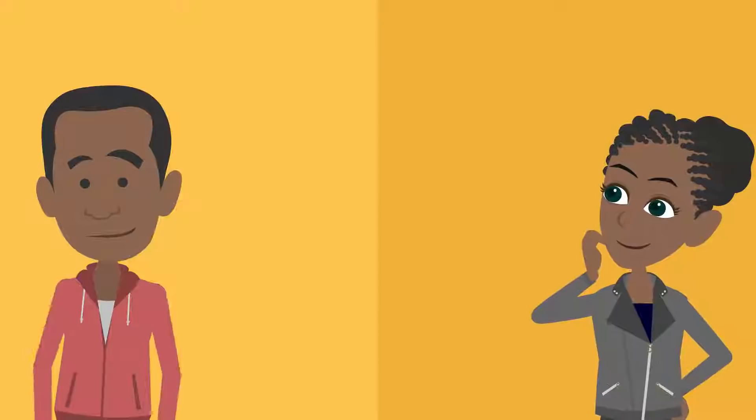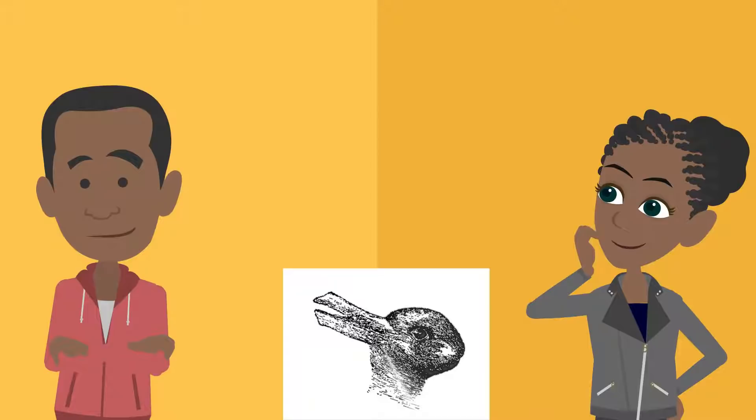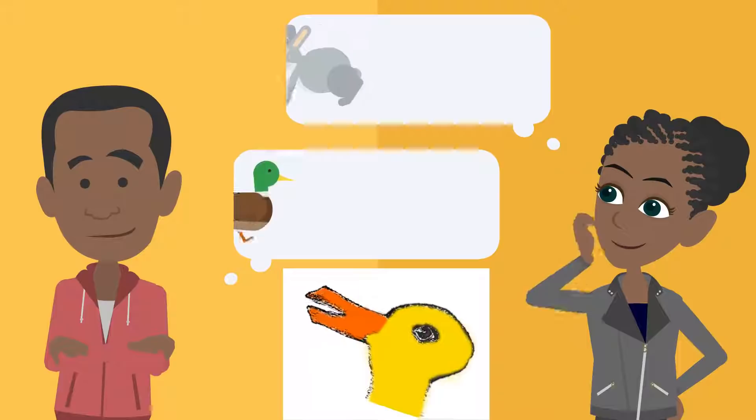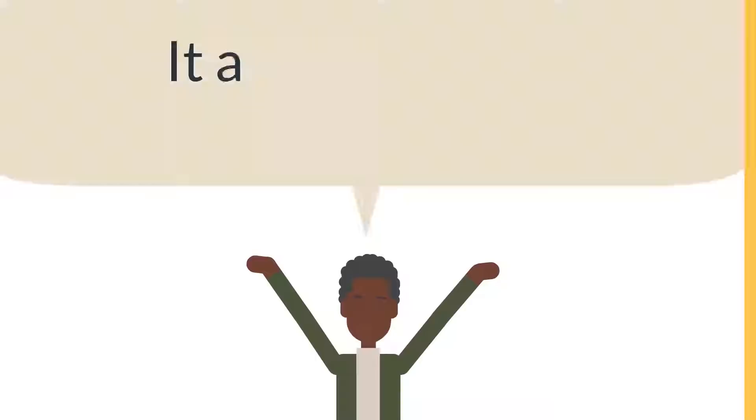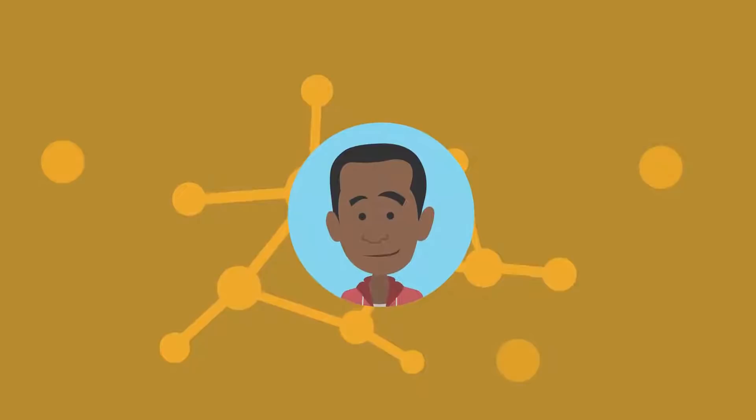This exercise demonstrates that even when presented with the same scenario or in this case image, we may see things differently. From one person's perspective it may be a rabbit and for another a duck. Some may see something entirely different. It all depends on your perspective.